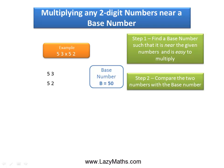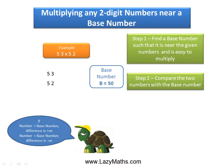The next step is to compare 53 and 52 with the base number 50. Since 53 is 3 more than 50, we put a plus 3 sign there. And since 52 is 2 more than 50, the difference is plus 2 in this case.